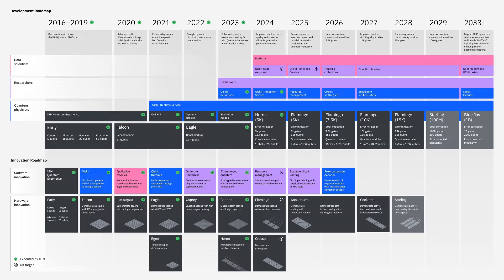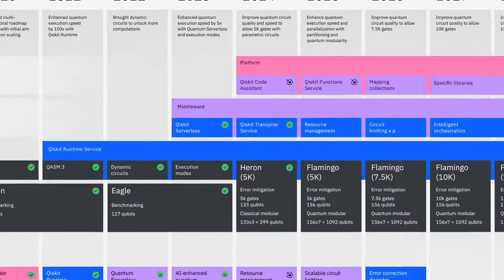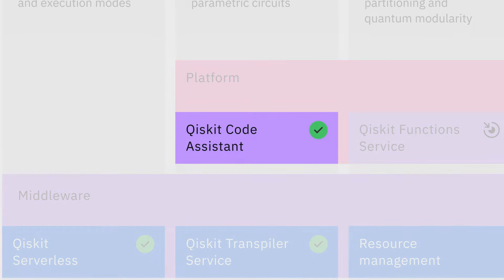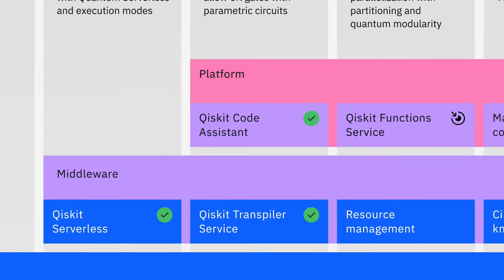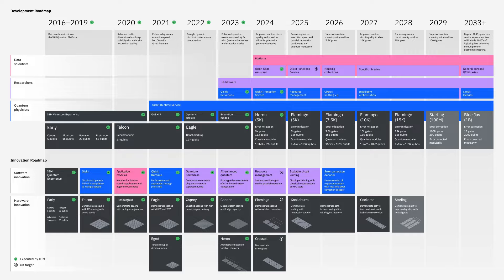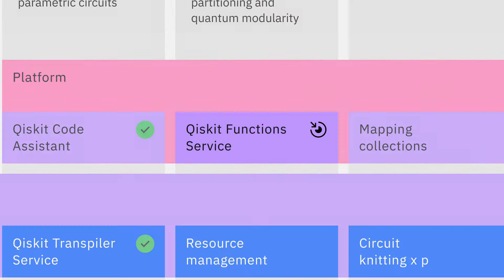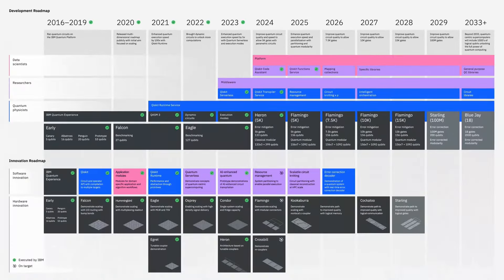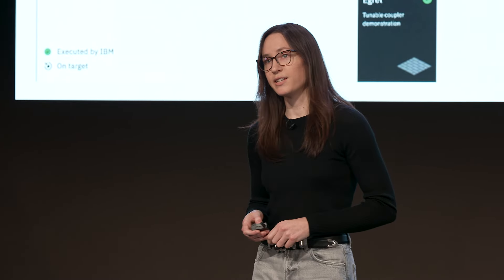I get to check off a few things off the roadmap too. First, let's check off the new Qiskit AI Code Assistant, available in preview. And second, here's something we've never done before: we can check off the Qiskit function service, which we'd originally slated for a 2025 release. Now I'll hand it back to Jay for a quick recap before we dive into our latest innovations.